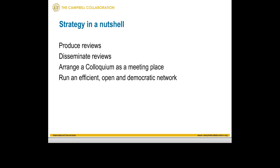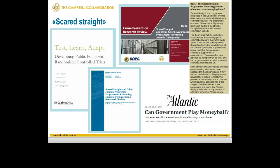The third area of our strategy is to run a regular colloquium as a meeting place — to exchange ideas, critique each other's work, and engage, building bridges between research people, policy people, and practitioners. And the fourth area is simply that we run our network efficiently, openly, and democratically. These are the areas we work on, and we can report a certain amount of progress. It's a constant challenge, but let's look at a few examples of reviews that have made an impact.